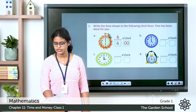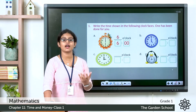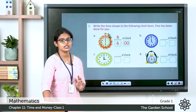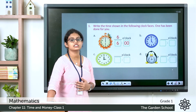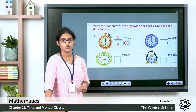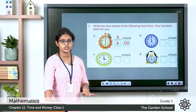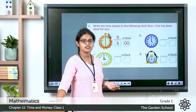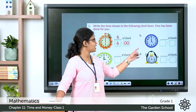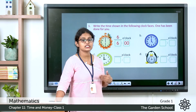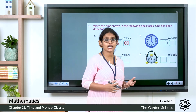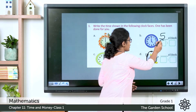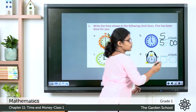Now take page number 159. We have some questions based on the topic of clocks. You have to write the time shown in the following clocks. The first one is already done. For the second one, the hour hand points to 5 and the minute hand points exactly to 12 — so the time is 5 o'clock, written as 5:00.